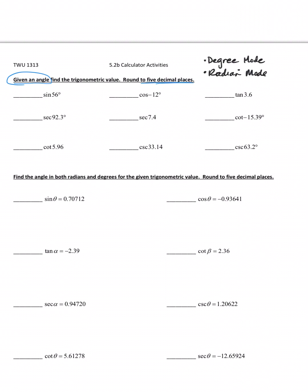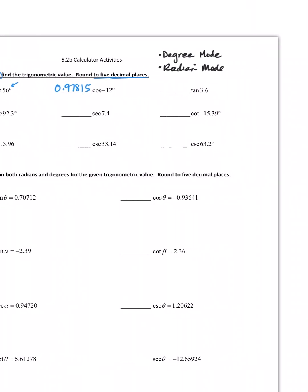Find sine of 56 degrees - that's obviously degree mode. I can type in sine of 56 just the way it looks and when I do I get 0.82904. Cosine of negative 12 degrees, you can type that in straight up and you get 0.97815.